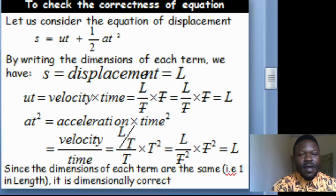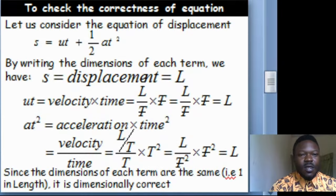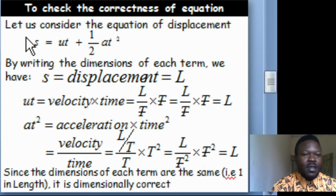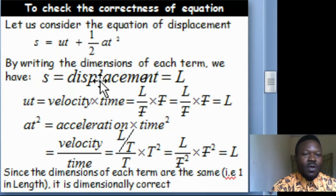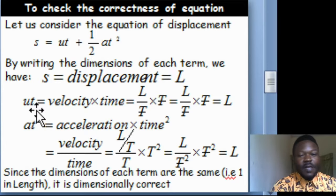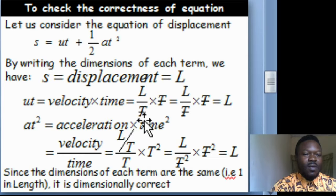Let's look at how we check correctness of an equation. Consider the equation of motion: S equals UT plus half AT squared, where S is displacement, U is velocity, T is time, and A is acceleration. S has dimension L. For the term UT: velocity is L over T, multiplied by time T — the T's cancel and we are left with L.